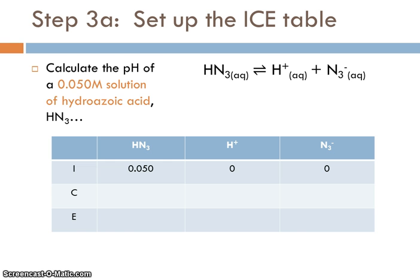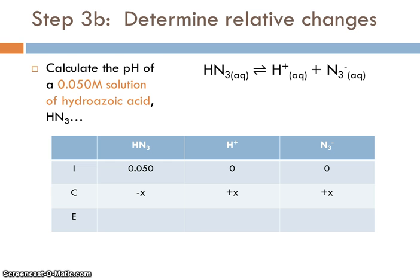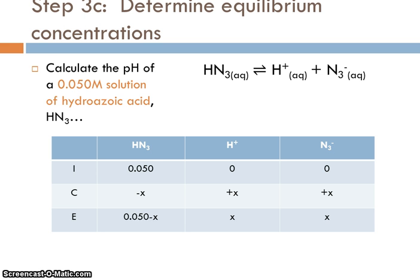Now we are ready to set up our ICE table. We knew that the original concentration of the acid was 0.050 molar, so we'll substitute that in, and that the initial concentration of H plus and N3 minus were both zero. Again, we're assuming that we can ignore the contribution of H plus from the autoionization of water here. The relative changes, much like what we saw before, the HN3 concentration has to drop by X. The H plus concentration and N3 minus concentrations both have to increase by X because they're in that one-to-one ratio. And so at equilibrium, the HN3 concentration would be 0.05 minus X, and H plus and N3 minus would each be X.